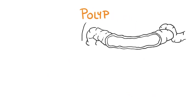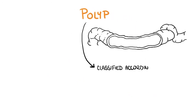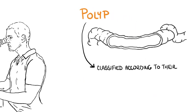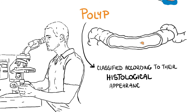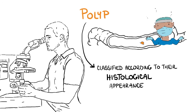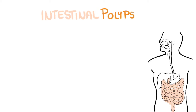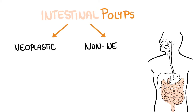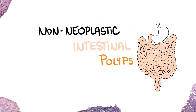Polyps can be further classified according to their histological appearance, since the macroscopic appearance alone doesn't allow exact diagnostic assessment. There are two main groups of intestinal polyps – neoplastic and non-neoplastic. In this video, we will focus on non-neoplastic polyps.